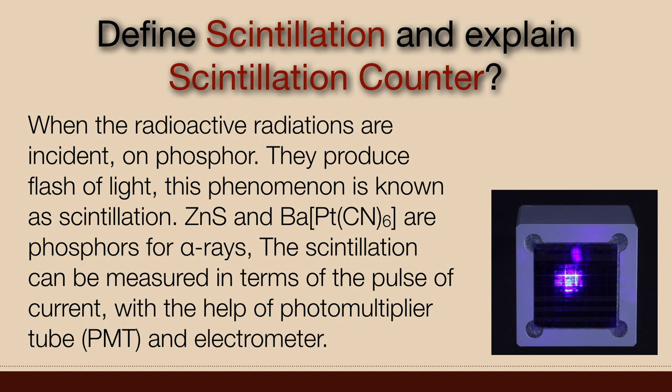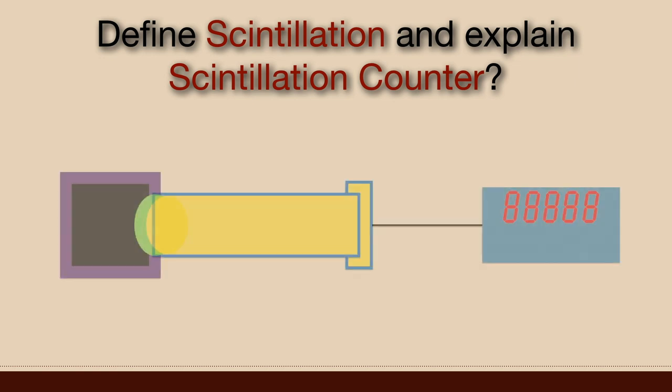In 1947, H. Kalman devised the scintillation counter. It consists of following three components.